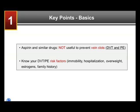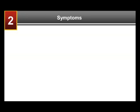The key points from this basic section are: aspirin and similar drugs are not useful to prevent clots in veins — DVT and PE. It is important for each of us to know our DVT and PE risk factors, which include immobility, hospitalization, overweight, estrogen use, pregnancy, family history, and clotting disorders.